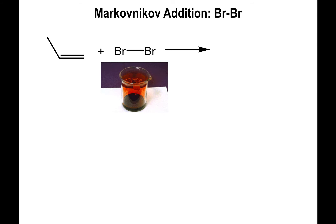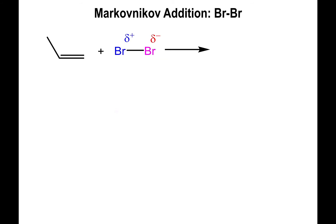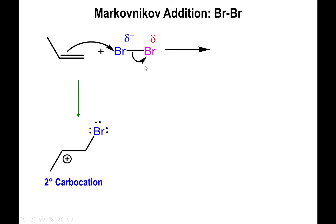Bromine is a dense red liquid with a low boiling point and high vapor pressure — you can see the red fumes present above the liquid phase. It's a very toxic substance requiring care in handling. The mechanism is essentially the same as with chlorine: the side of the dibromine molecule closest to the alkene develops a delta-plus charge, gets attacked by the alkene, and one of the electrons moves to the other bromine to create bromide.